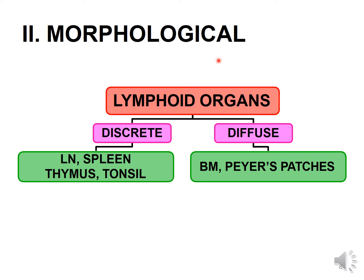The second classification is morphological classification. Morphologically, lymphoid organs are discrete and diffuse types. Discrete organs include lymph nodes, spleen, thymus, and tonsils. Diffuse organs are bone marrow and Peyer's patches of the small intestine.